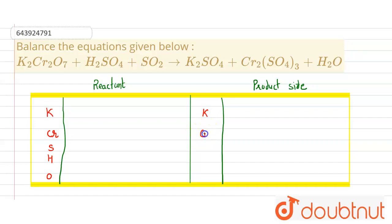Here it is potassium, chromium, sulfur, hydrogen, and oxygen. On the reactant side, the number of potassium is 2, chromium is also 2, sulfur is 1 plus 1 - one is from here, one is from here - and hydrogen is 2.